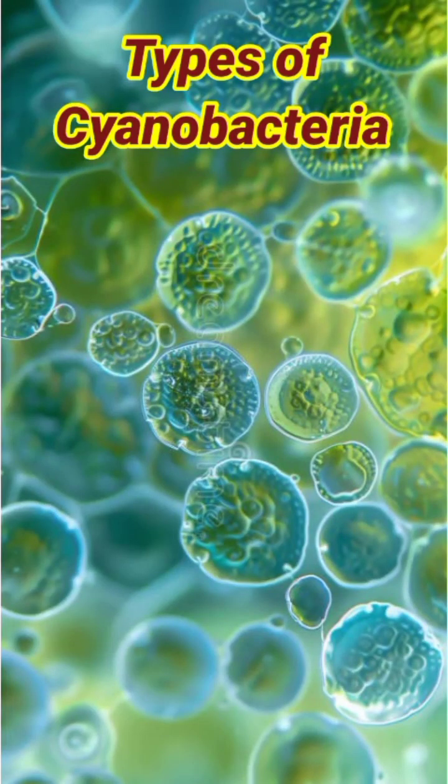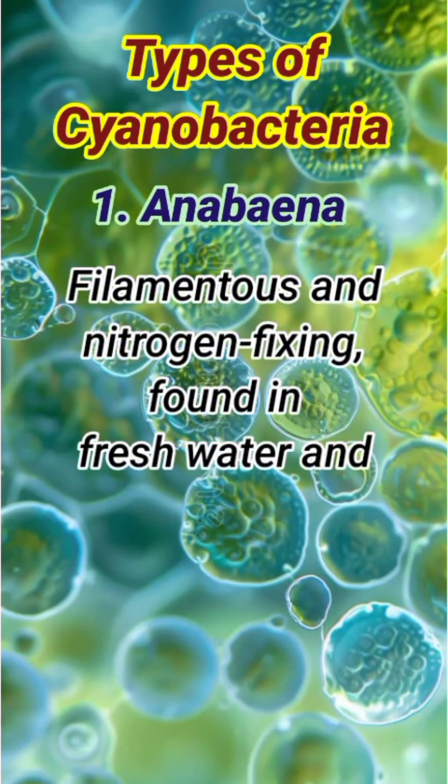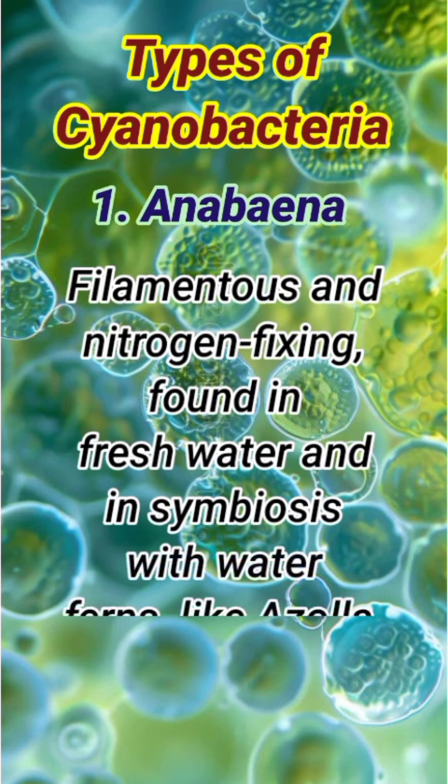Here are some types of cyanobacteria. Number 1: Anabaena. Filamentous and nitrogen-fixing, found in freshwater and in symbiosis with water ferns like Azolla.